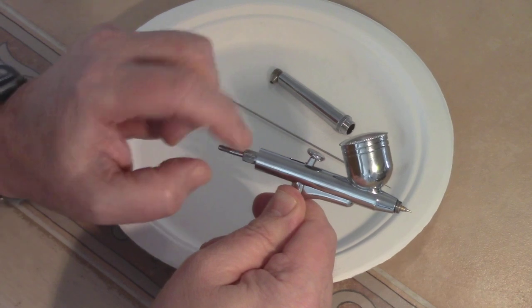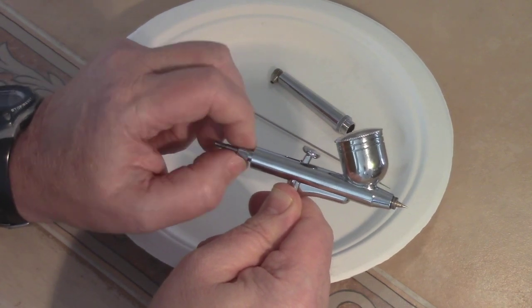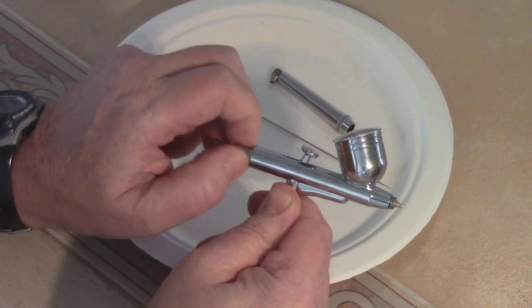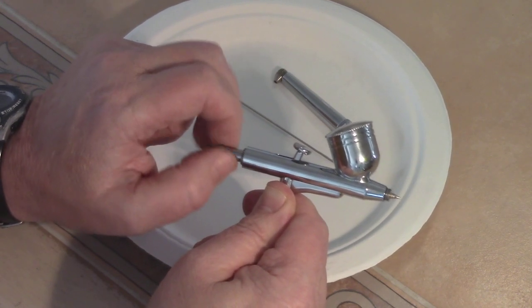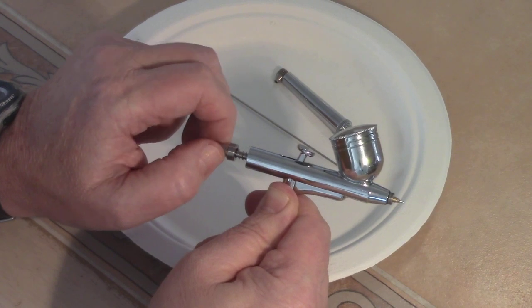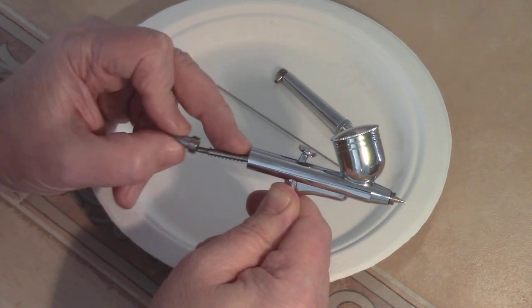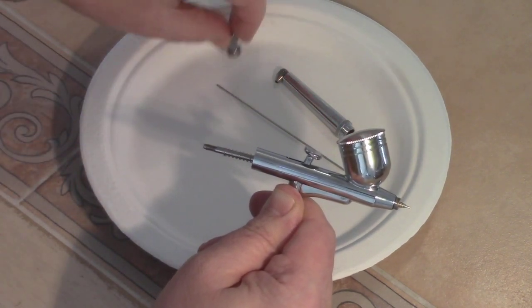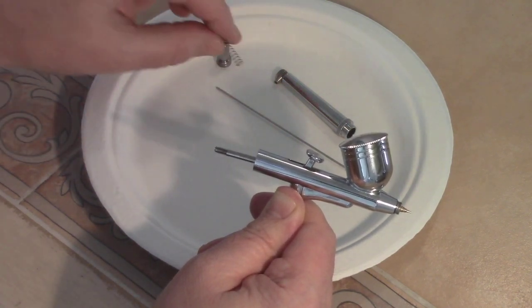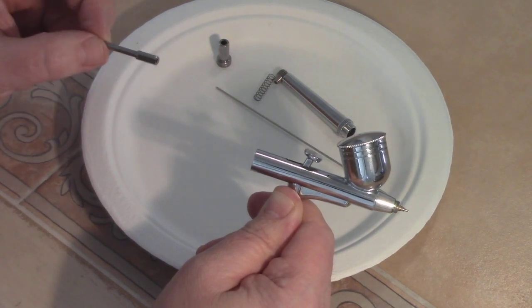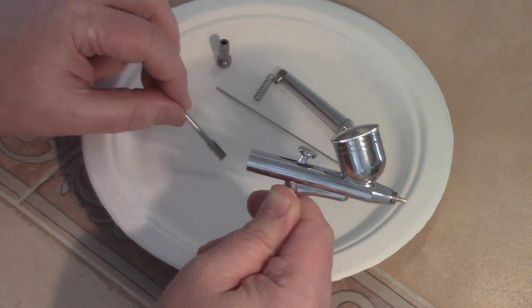This is the needle guide, this is the needle guide nut, so that comes off and screws out a little ways. We have a spring, and then we have the needle guide itself, or the needle guide shaft.